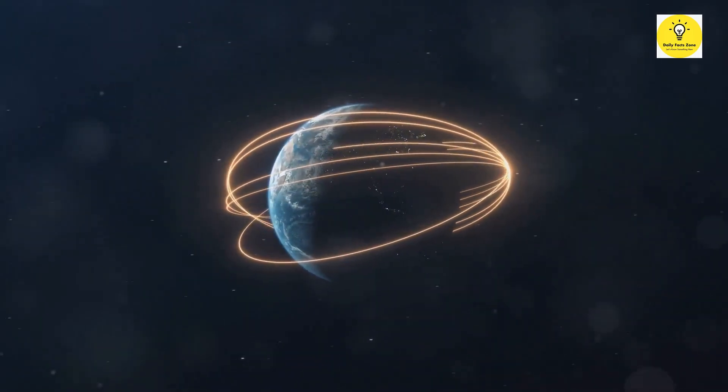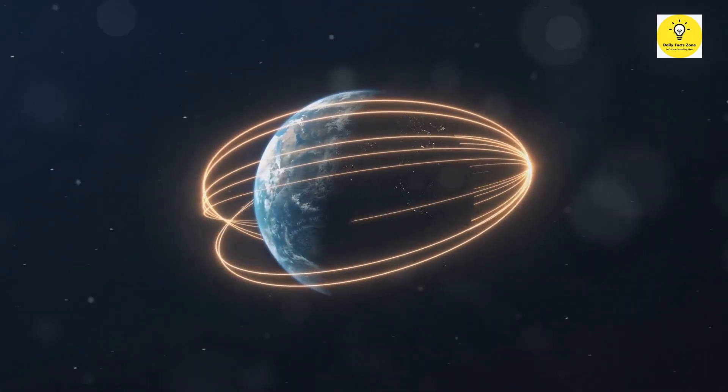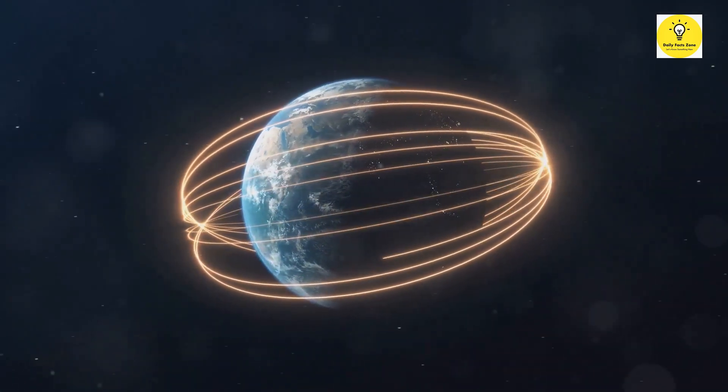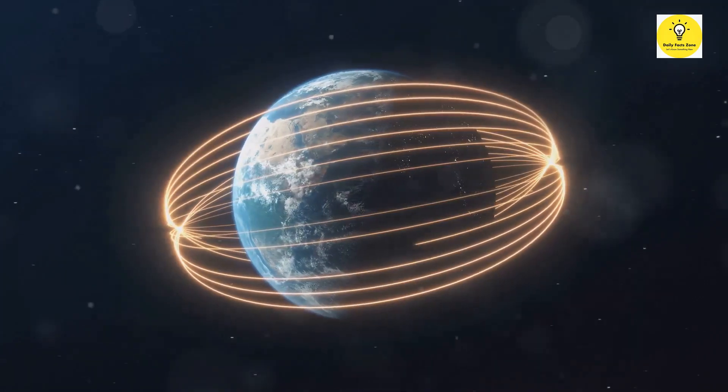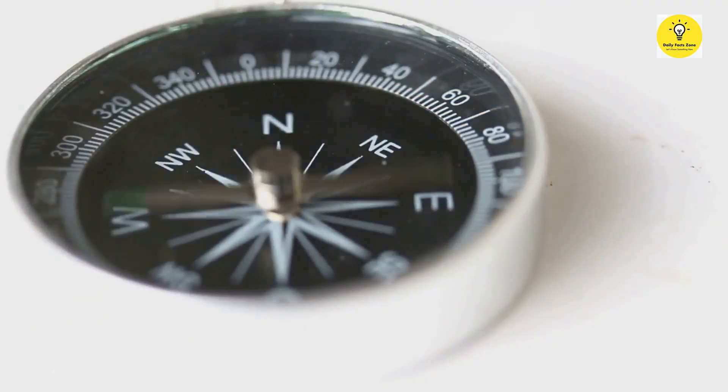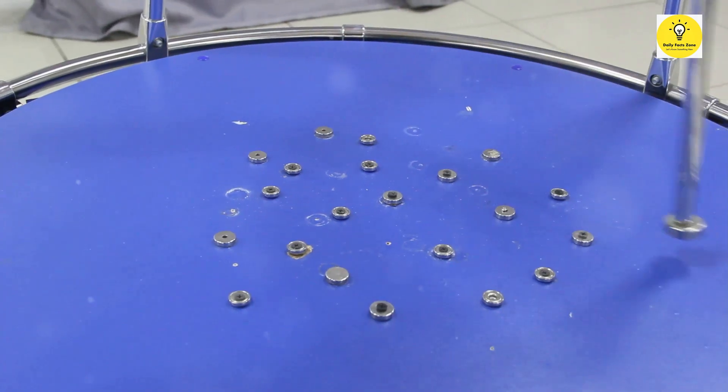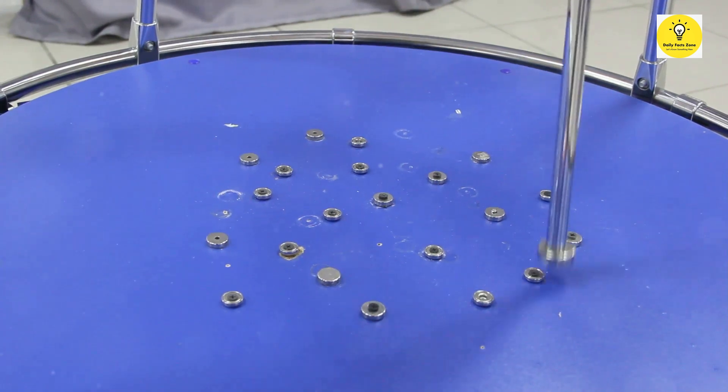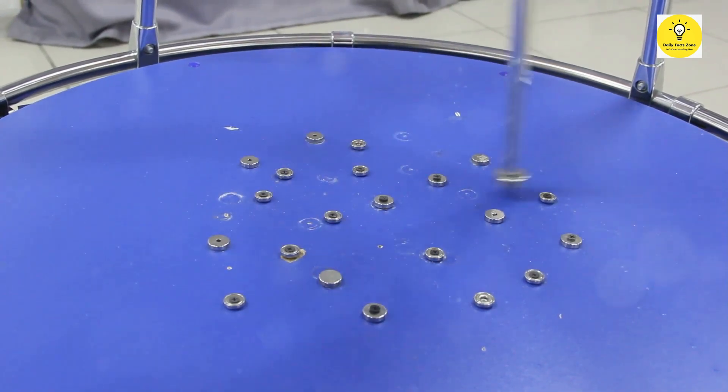The compass, a tool that guided explorers for centuries, relies on Earth's magnetic field, a natural phenomenon crucial for navigation. This same magnetic field shields us from harmful radiation from the sun, acting as a protective barrier. Without magnetism, life as we know it would not exist, as it plays a vital role in maintaining our planet's habitability.